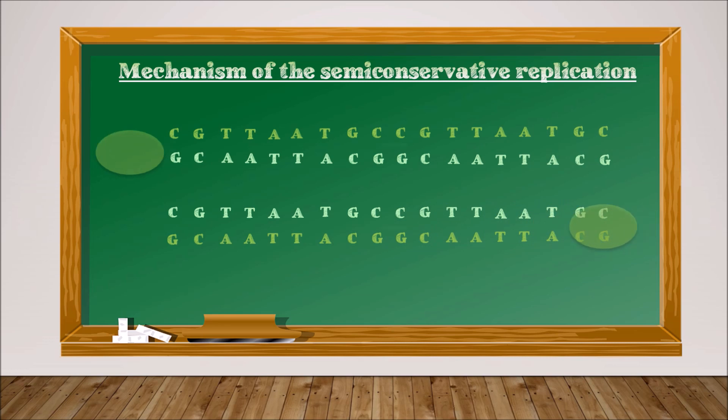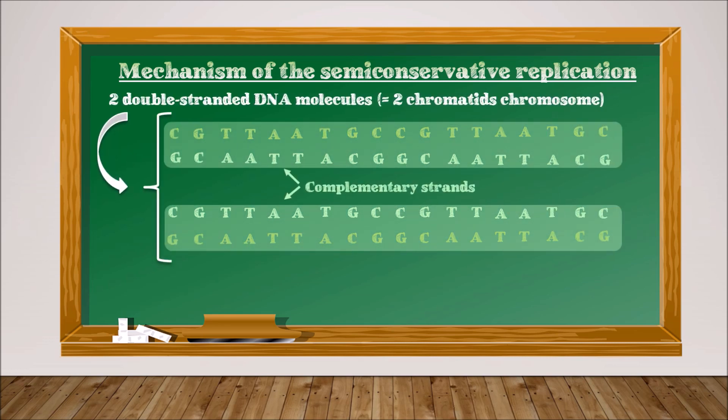Therefore, we get two double-stranded DNA molecules, which corresponds to a two chromatid chromosome.